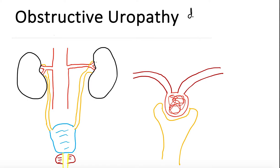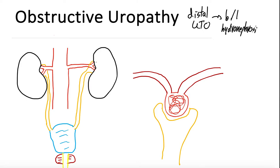We're going to hone in on distal urinary tract obstruction leading to bilateral hydronephrosis. So what is obstructive uropathy? The first word is obstructive — it's causing an obstruction somewhere in the urinary tract — and uropathy means renal dysfunction. So it's an obstruction somewhere in the urinary tract leading to renal dysfunction. Urinary tract obstruction is actually fairly common.